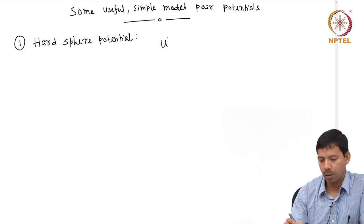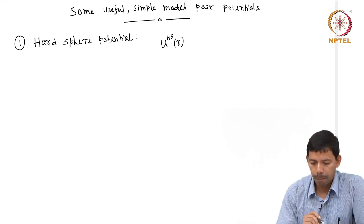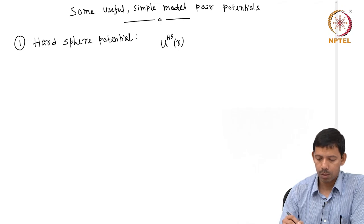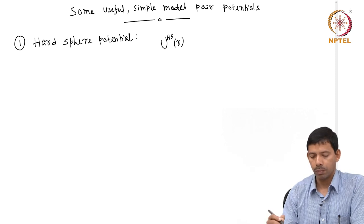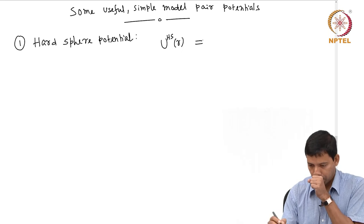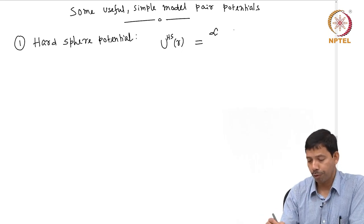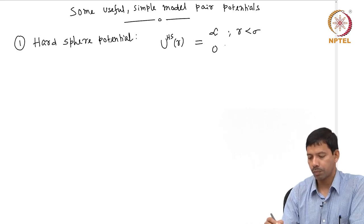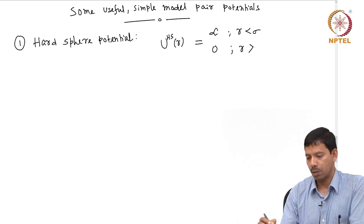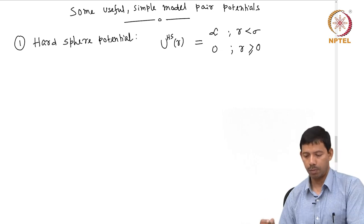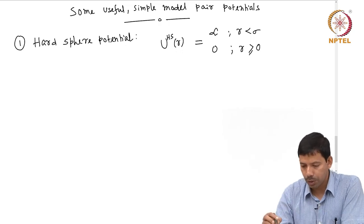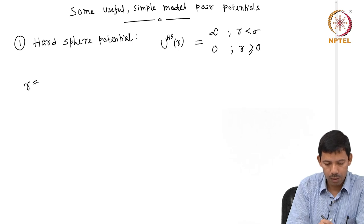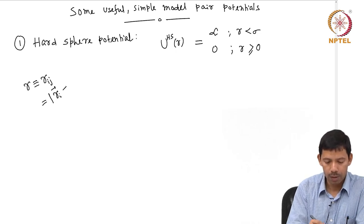The hard sphere potential U is infinity for the inter-particle distance r less than sigma, and it is 0 when r is greater than or equal to sigma. Here r is basically r_ij, which is nothing but the distance between the i-th particle and the j-th particle.